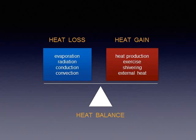Your body tries to maintain homeostasis of temperature, keeping the core temperature at a balance between heat loss and heat gain. On one side of this balance, the body loses heat through evaporation, radiation, conduction, and convection — all covered in the hypothermia module. On the other side, the body gains heat through heat production, exercise, shivering, and external heat application.